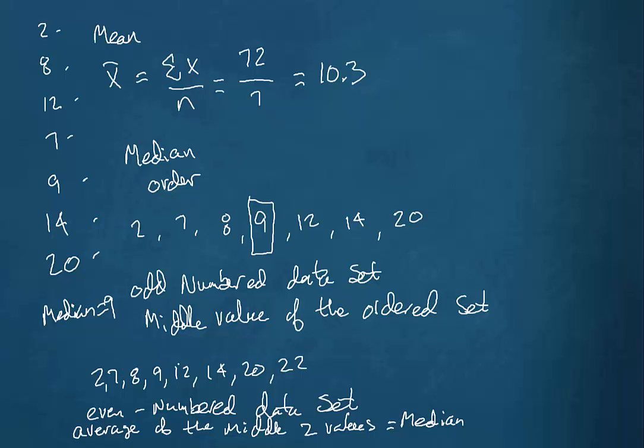We have 1, 2, 3, 4, 5, 6, 7, 8 data values. Well, counting from the bottom up, the fourth one would be 9. Counting from the top down, the fourth one would be 12.